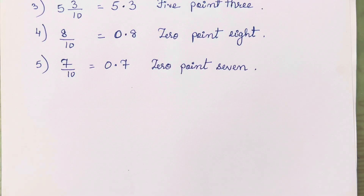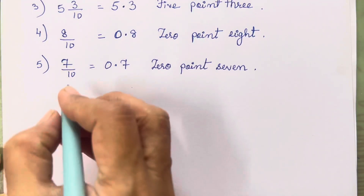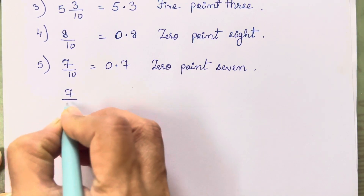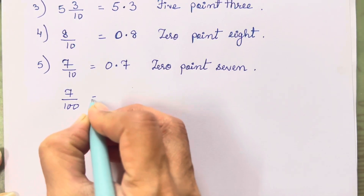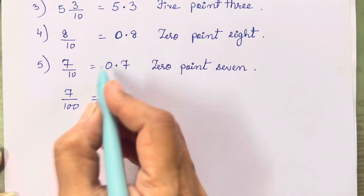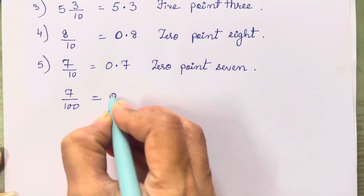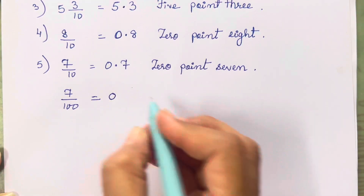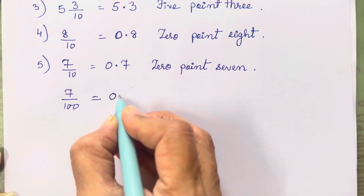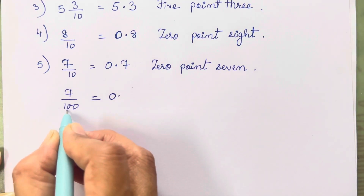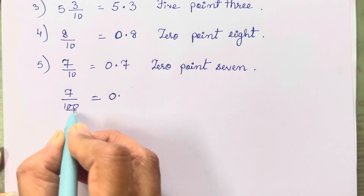You have to first concentrate on 10s and then 100 and then 1000. So if I take the same number 7/100 — there is no whole number here, so we add 0 as usual, then a decimal point. Now you will see there are two zeros in 100.